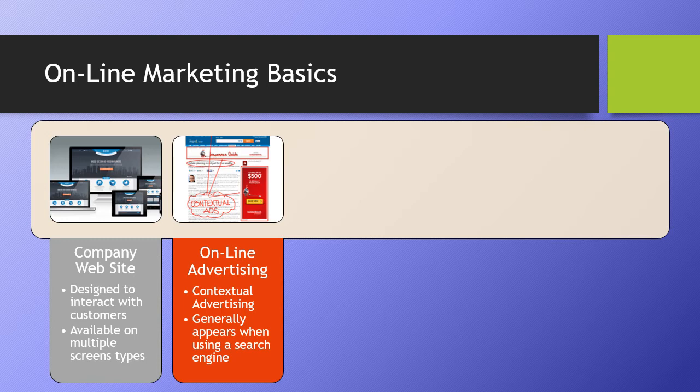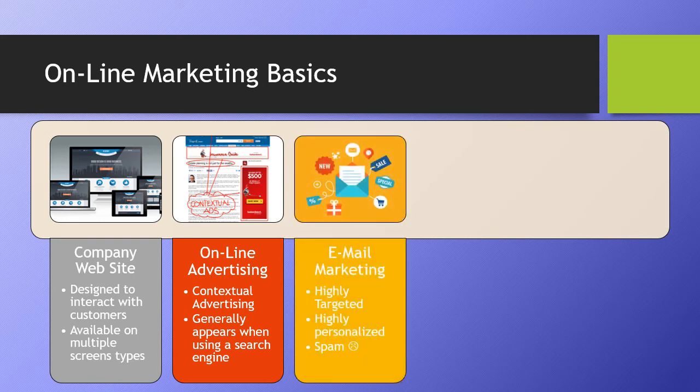Today's rich media ads incorporate animation, videos, sounds, and interactivity. The largest form of online advertising is search advertising — also called contextual advertising — where text-based ads and links appear alongside search engine results on sites such as Google, Yahoo, and Bing. Email marketing refers to sending highly targeted, highly personalized, relationship-building marketing messages via email. When used properly, email can be the ultimate direct marketing medium, but there is a darker side called spam — unsolicited unwanted commercial email that irritates consumers. To address this, most legitimate marketers now practice permission-based email marketing, sending pitches only to customers who opt in, with an option to opt out.